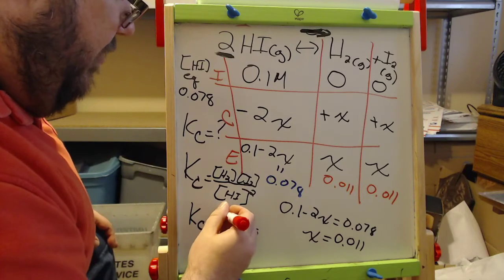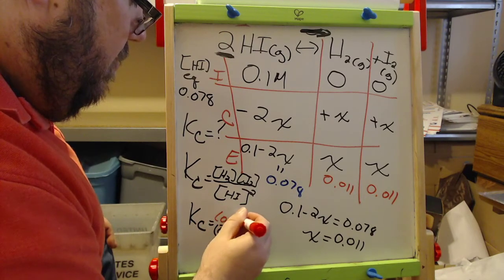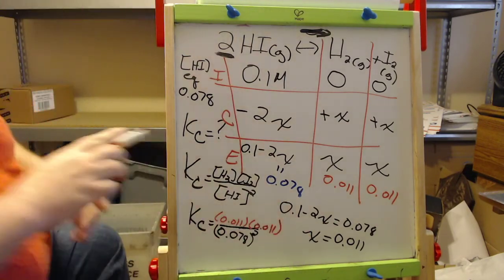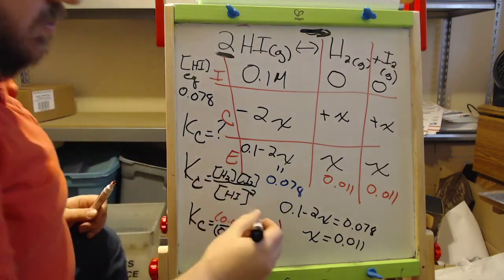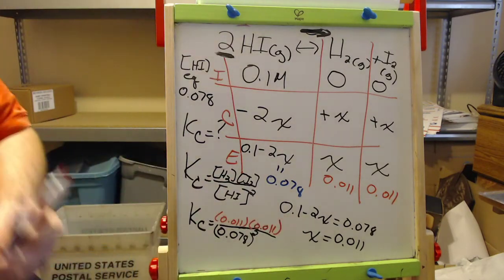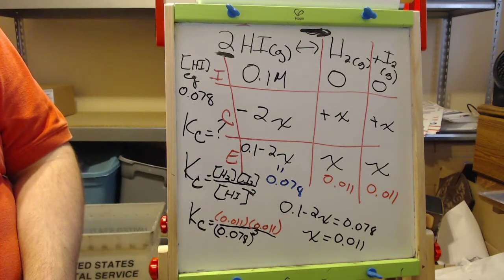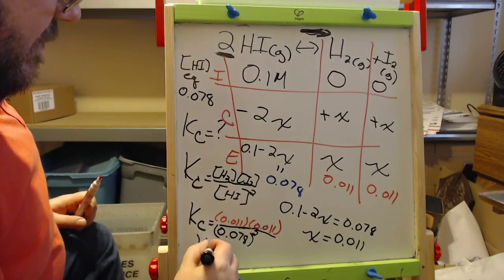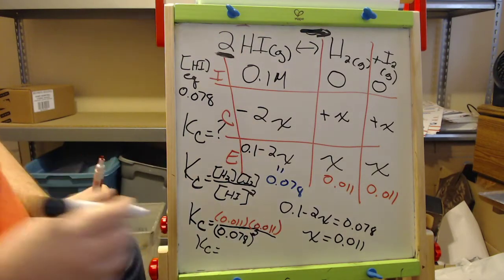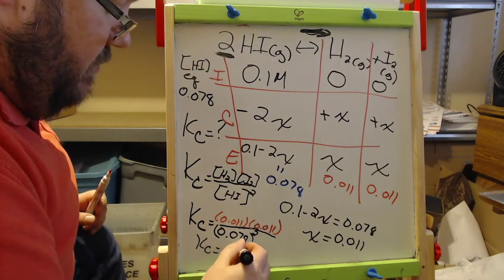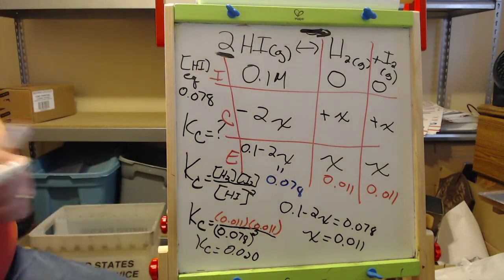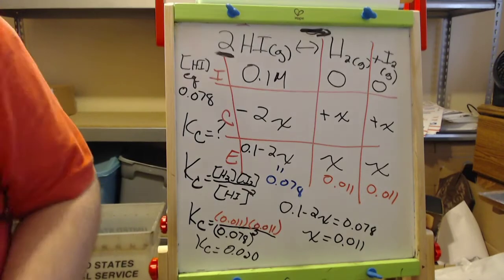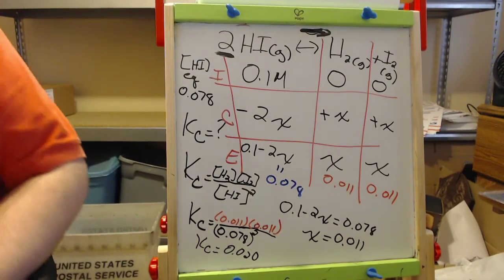Now we can plug those values into our KC expression and solve. KC comes out to be 0.020.